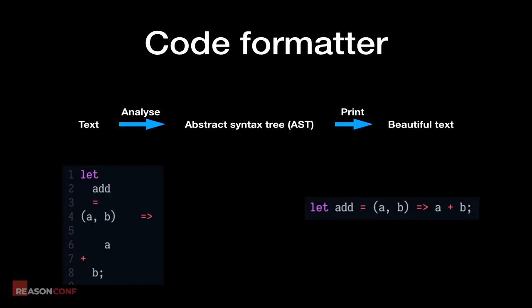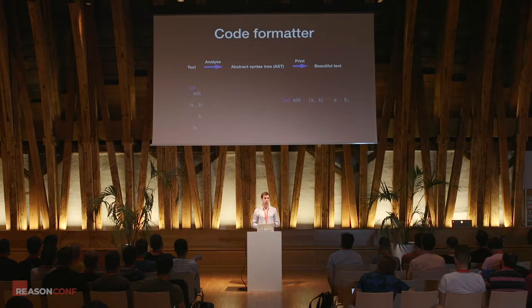Is it a compiler? Is it a linter? What does it do? What does it mean? Maybe it's AI. In fact, a code formatter is a very simple tool. It takes the text, the source code of your program, analyzes its meaning to a certain degree, and then, based on the analysis, reprints the whole source text. In essence, it's a function from ugly text to beautiful text.